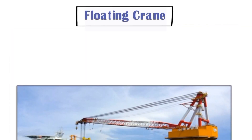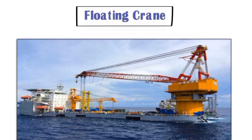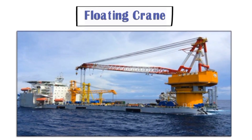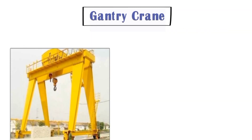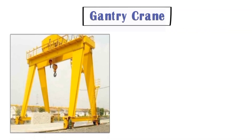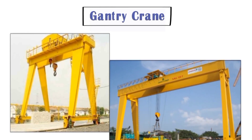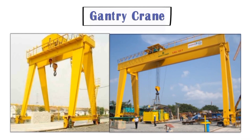Next comes the floating crane, as you can see in the picture. This crane is used at shipyards because it is mounted on a ship. If you have to work on sea water and move any material from one place to another, you can use this floating crane. Next comes the gantry crane, which is installed on rail and can move within a fixed area. These are all examples of stationary cranes.